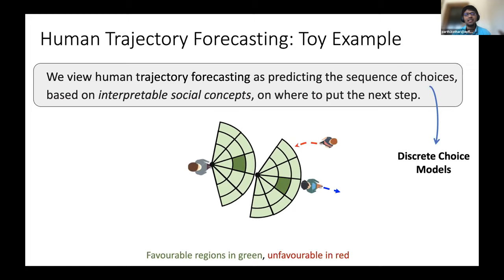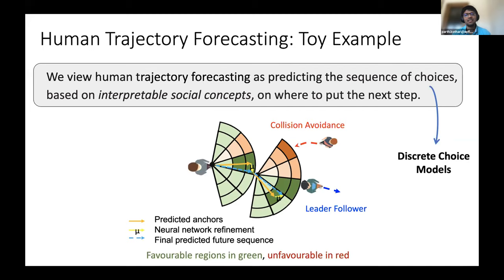And these choices are based on interpretable social concepts like leader-follower, collision avoidance. So given the pedestrian on the left which is a primary pedestrian, these are the 15 choices he has in front of him at each time step. And if no neighbors are present, pedestrian prefers to maintain the same speed and same direction. Now due to social concept of leader-follower, some of the cells become more active, have a higher probability of getting accepted. And to prevent collision avoidance, the probability of some of the cells go lower. And given these new probabilities, we predict different anchors. And as you can see, the output of this method is discrete, and so on top of that we add a neural network-based refinement.